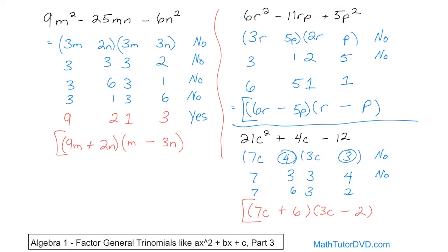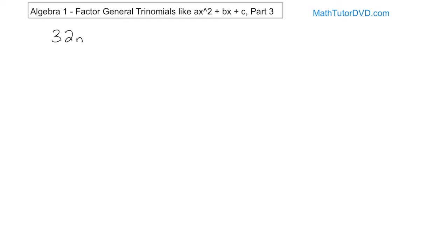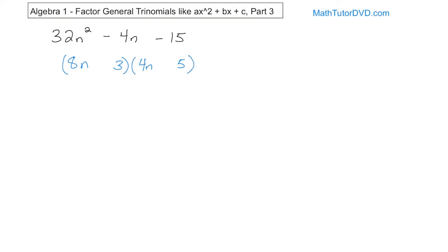Now we have one more problem. What if we have 32n squared minus 4n minus 15? It's kind of a nightmare because 32 is such a big number — 8 times 4 is 32, 16 times 2 is 32, lots of different things. And for 15, you have 3 times 5 is 15 and 1 times 15. So we start with 32: 8 times 4 is 32, so I'm going to write 8n times 4n. That gives us 32n squared. Then what times what gives me 15? 3 times 5. 3 times 4 is 12, and 8 times 5 is 40. Even if I subtract them, there's no way I get 4. So this is not right.